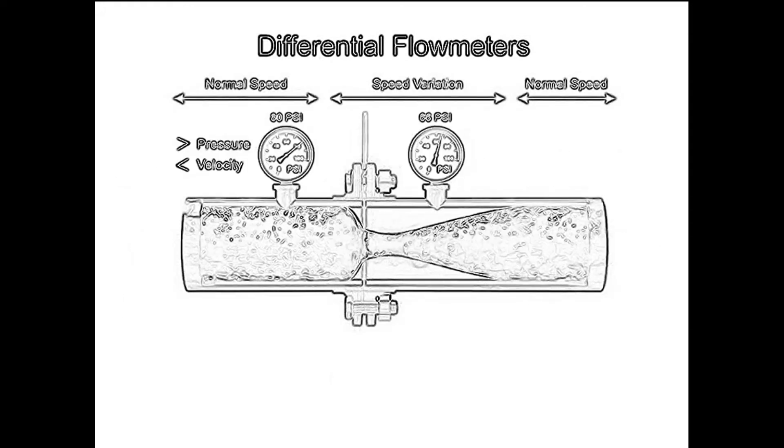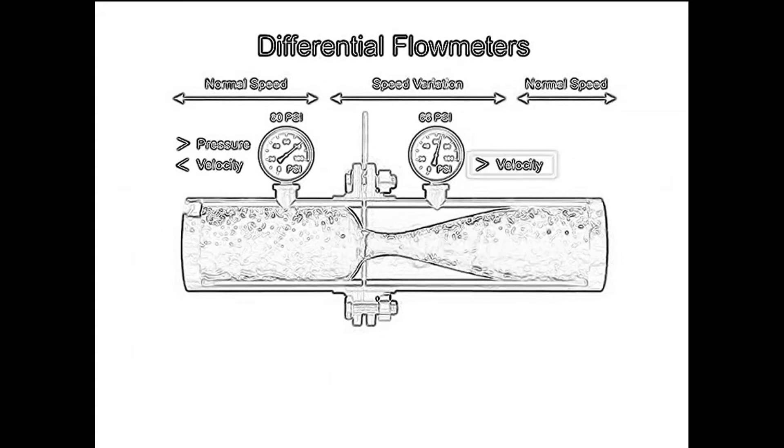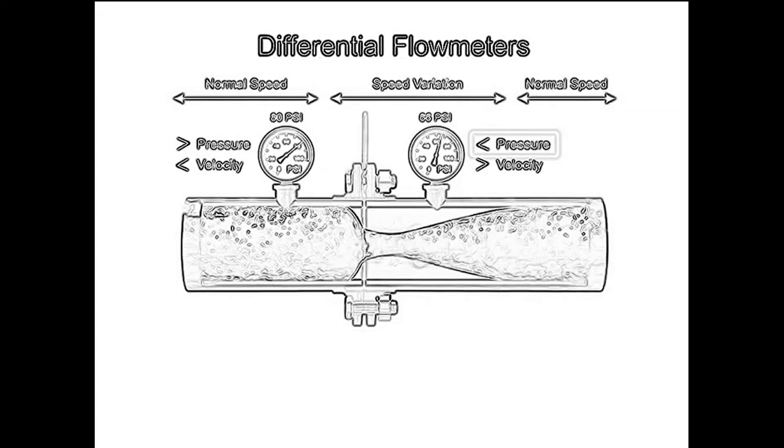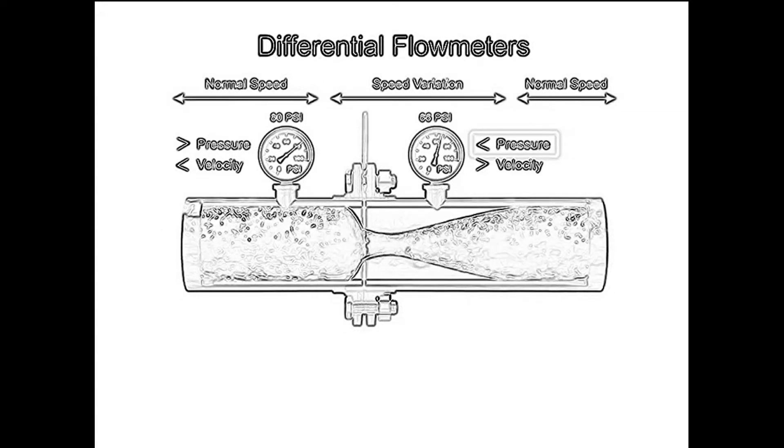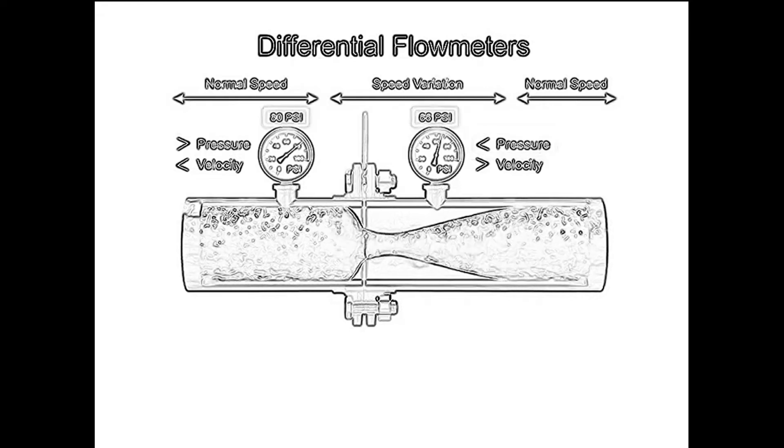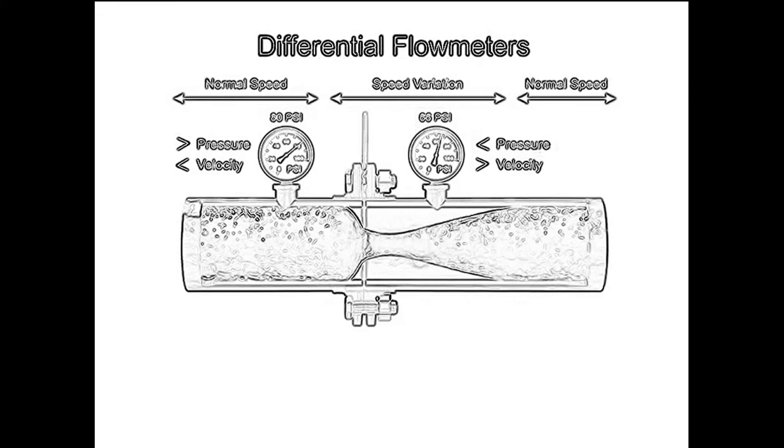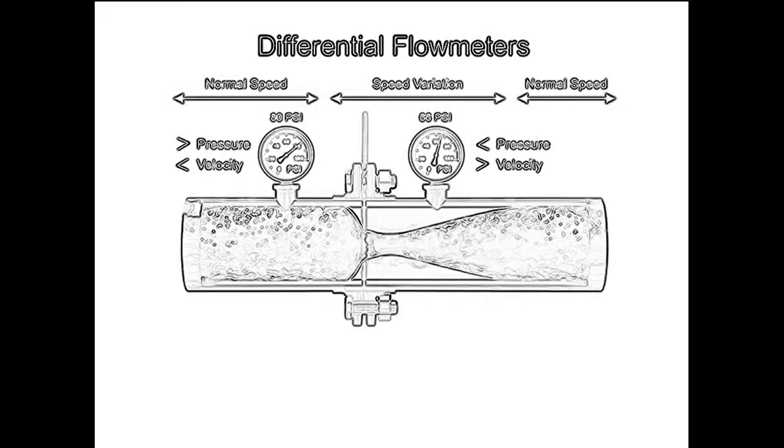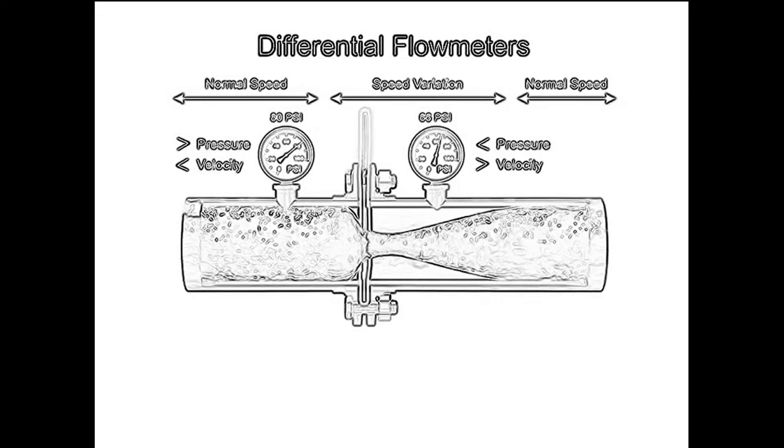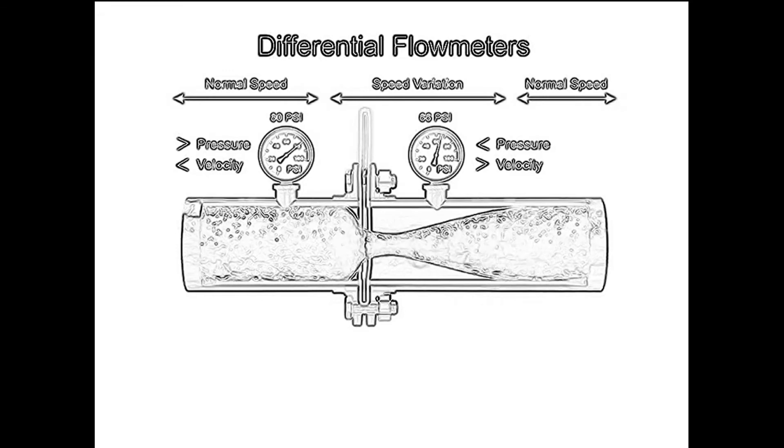Applying Bernoulli's principle, the increased fluid velocity results in a decrease in pressure. As the fluid flow rate increases through the pipe, back pressure on the incoming side increases due to the restriction of flow created by the orifice plate.